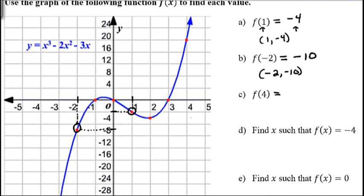And f of 4, do the same thing. So we're going to go to 4 on the x-axis, which is right here. And then we're going to go up until we hit the graph. And that happens right at this red dot. And then trace over to the y-axis again, which is right here. And so that's 4, 8, 12, 16, 20. And so f of 4 is equal to 20, and the corresponding point is 4, 20.